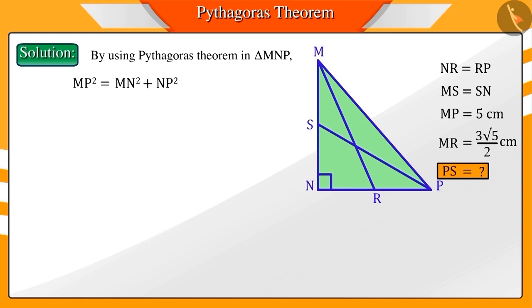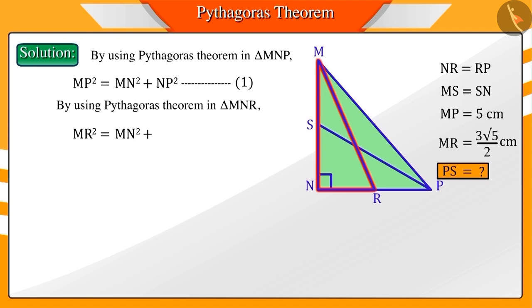Similarly, in right-angled triangle MNR, square of MR will be equal to the square of MN plus square of NR. We know that NR and RP are two equal parts of NP. Hence, NR equals NP by 2.